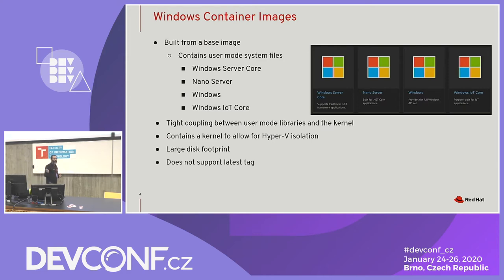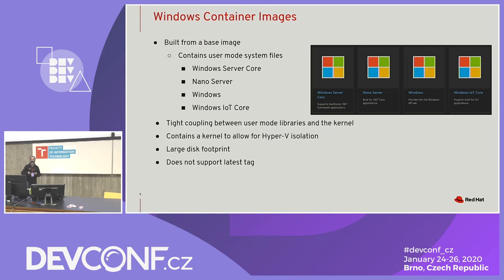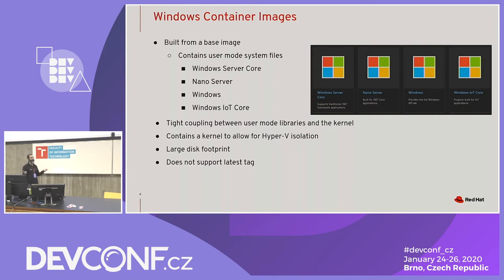The other quirk with Windows container images is that they don't support the latest tag — you have to be specific. If you want to use Windows Server Core, you have to specify a tag like LTSC 2019, which indicates this is a 2019 instance of Windows Server Core. They have similar tags for Windows Server 2016 containers. That's another difference you'd have to get used to.